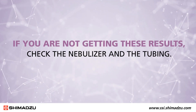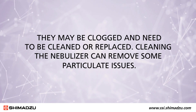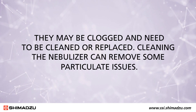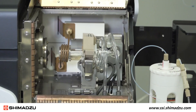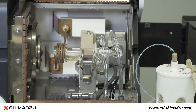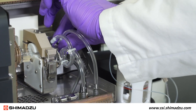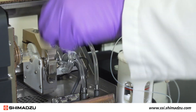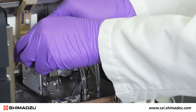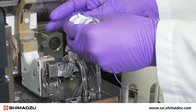If you are not getting these results, check the nebulizer and the tubing. They may be clogged and need to be cleaned or replaced. Cleaning the nebulizer can remove some particulate issues. Next, the torch and interface cones can be visually inspected. The torch should be checked for evidence of deposits or blockage on the torch injector and also for wear, which appears as white discolorations or melting at the torch tip. If you find blockage or wear, you should consider replacing the torch.